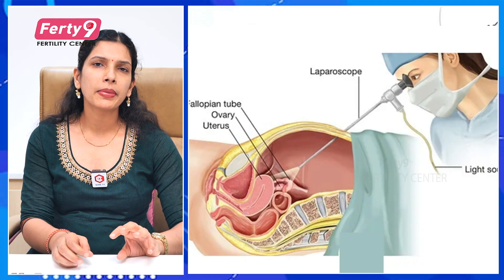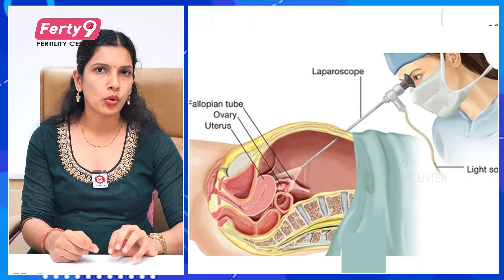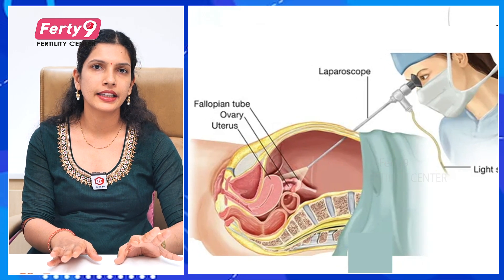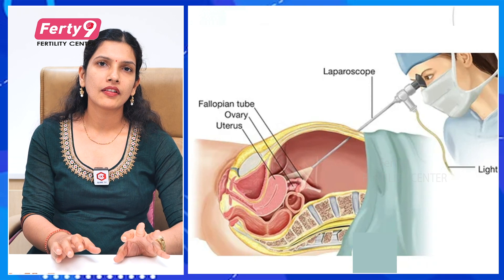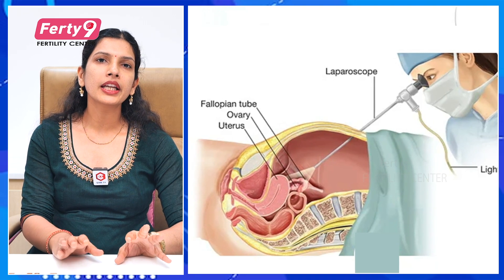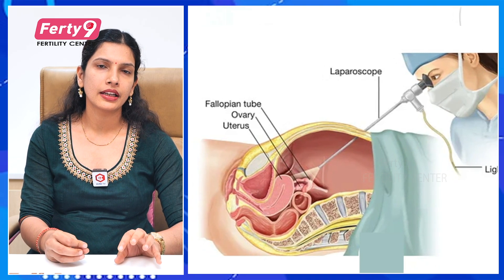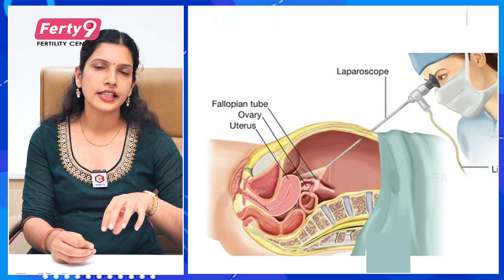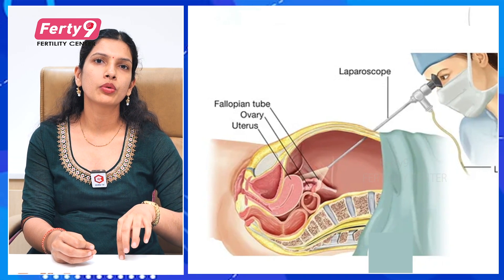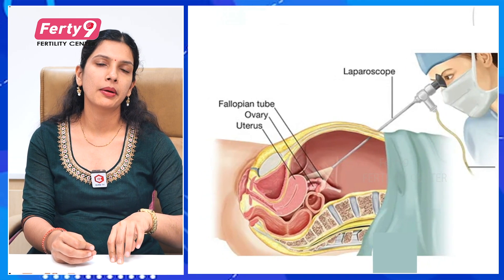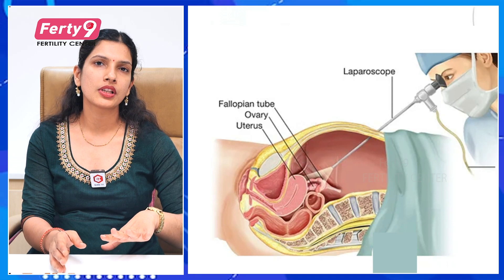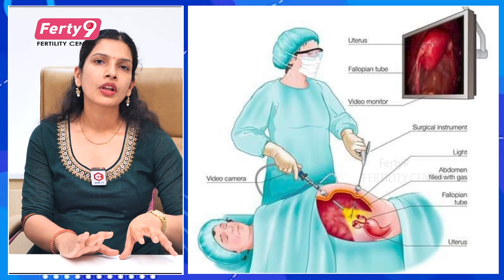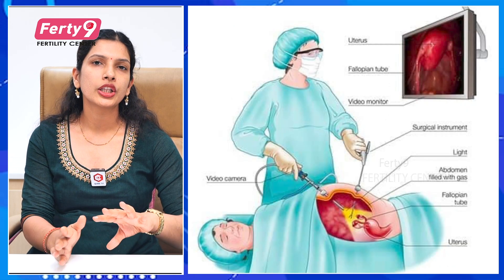In the laparoscopy procedure, we fill carbon dioxide gas into the abdomen. Then we insert a camera inside. We also use instruments through two or three small incisions, and examine the uterus.